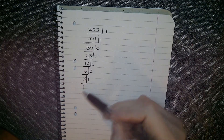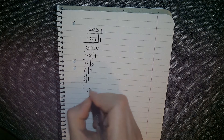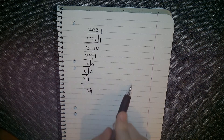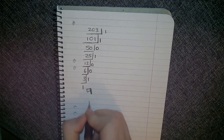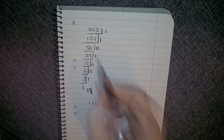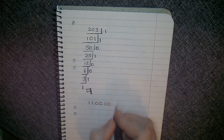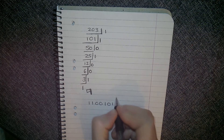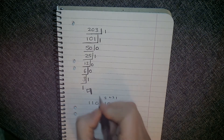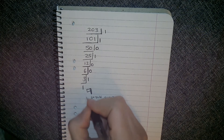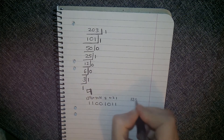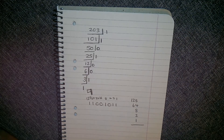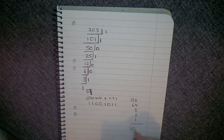Now we start reading from the bottom. I like to imagine you have a little axe and you're cutting down a tree — the tree falls to the right. Reading upward from the bottom: 1, 1, 0, 0, 1, 0, 1, 1. That gives you 11001011, which equals 203. You can verify: 128 + 64 + 8 + 2 + 1 = 203.